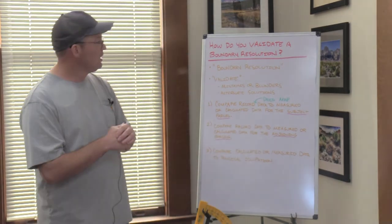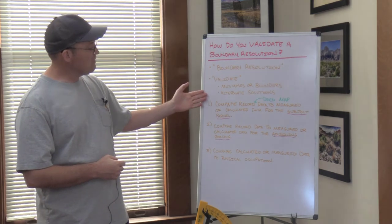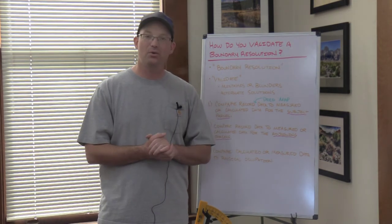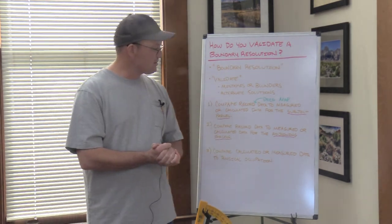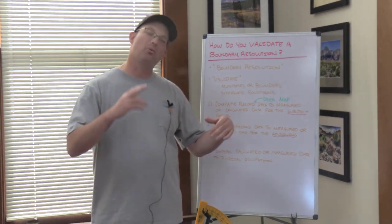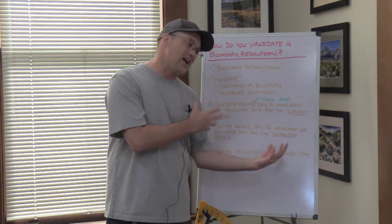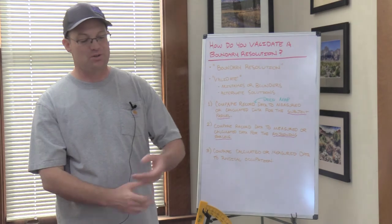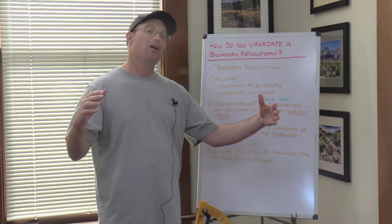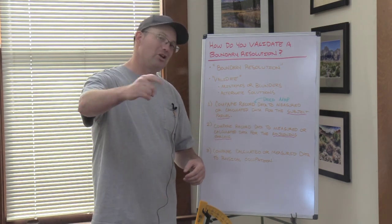So there you go. That's an introduction to how you validate a boundary resolution — we talked about what that actually means, and I gave you the three steps. We're going to do two or three more videos that walk you through this process in a little more detail. The very next video we're going to look at an example, maybe two examples, where we actually show you what this means when you work through these three steps with more concrete examples. I know this is a complicated topic — it can make your head hurt — but it's really important. Thank you for watching.